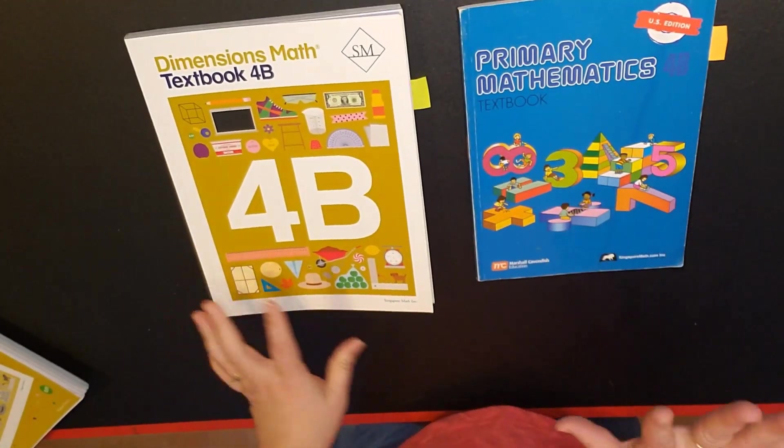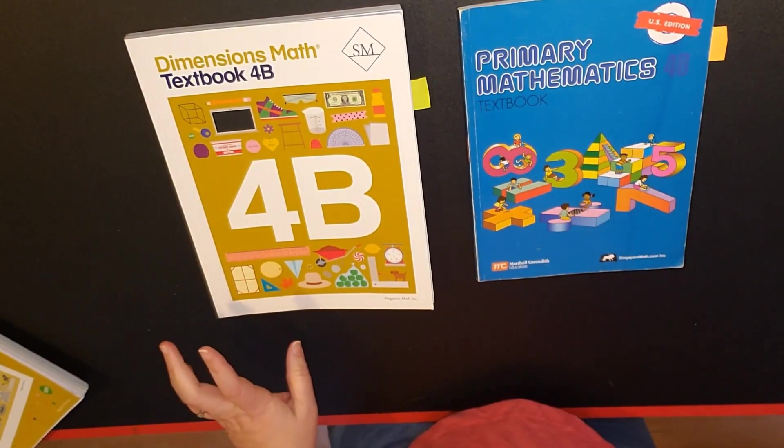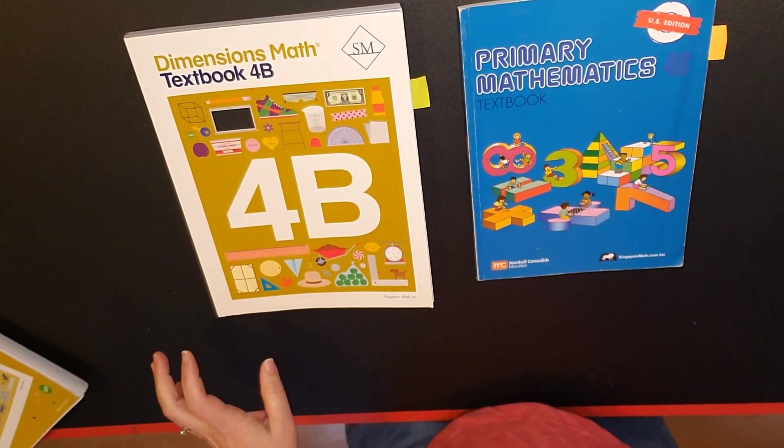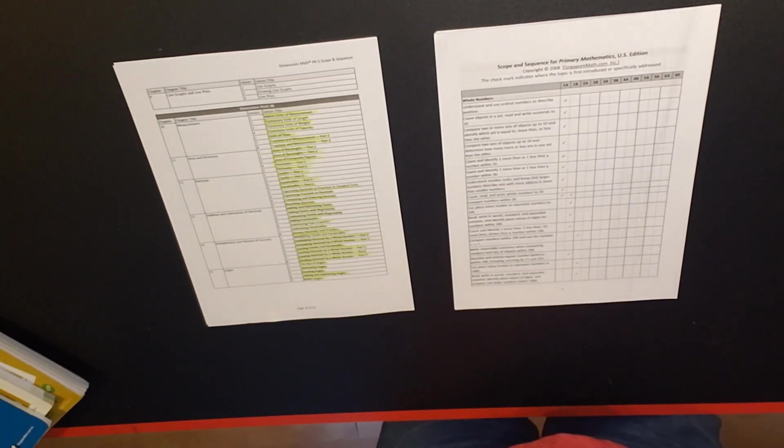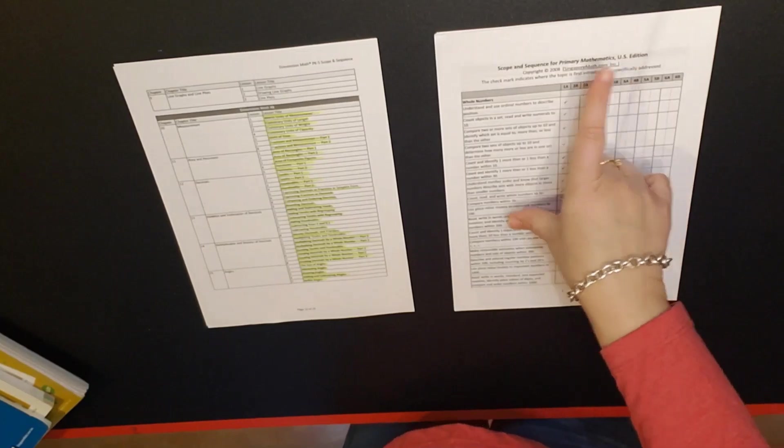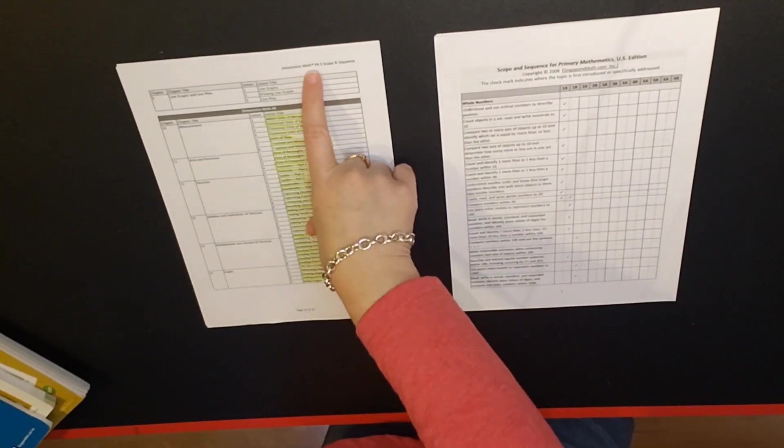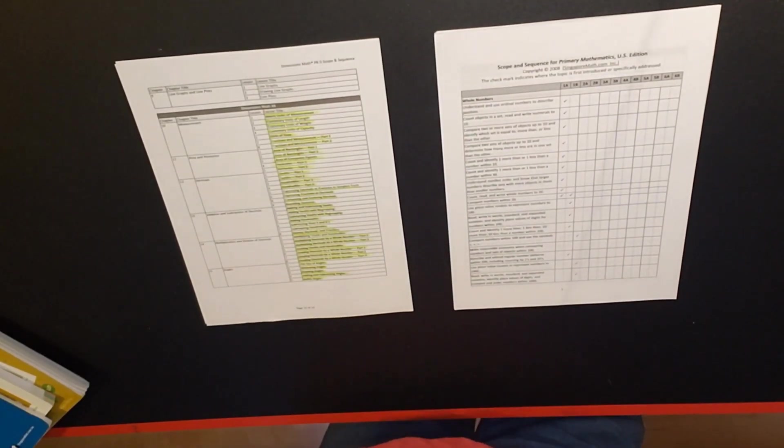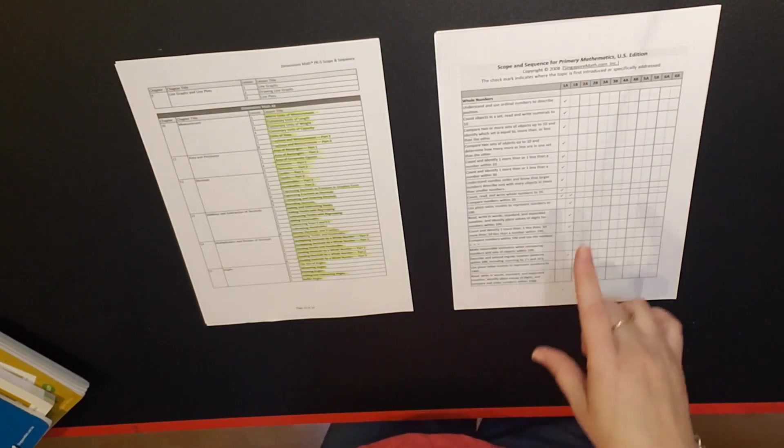Now before I get started with this I want to talk about scope and sequence. I went on to the dimensions website and printed out the scope and sequence for the primary mathematics US edition and then also the dimensions math scope and sequence. Now it is set up differently so you have to do a little bit of work with this.